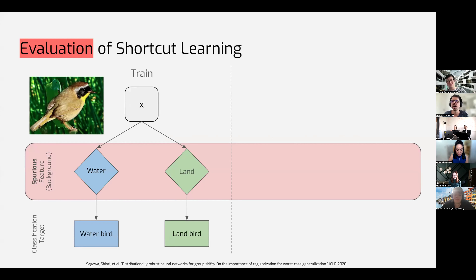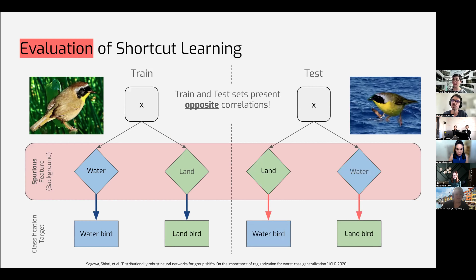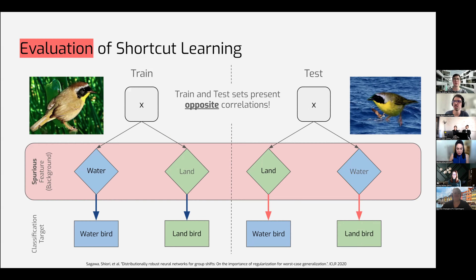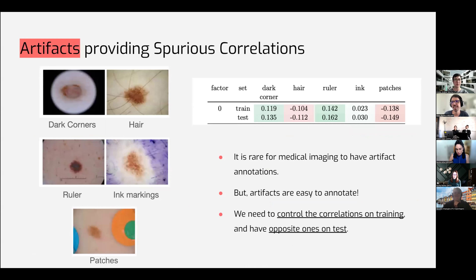Shortcut learning is a problem of mismatch between train and test sets. On training, for example, there is some spurious feature - in this case, the background of the image. On test, the correlation of this spurious feature to the actual classification target changes. Before, water was correlated to waterbirds, and on test, now it's land. If the model learns to classify based on this spurious feature, it will be heavily penalized during testing. We want to do something similar, but for medical imaging.